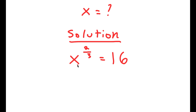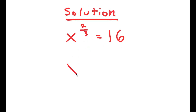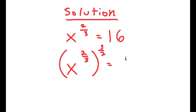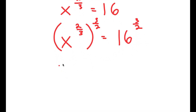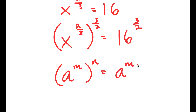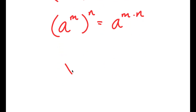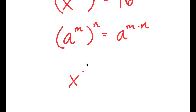What I'm first going to do is take the power of 3 over 2 on both sides. So now I have x to the power of 2 over 3 to the power of 3 over 2 is equal to 16 to the power of 3 over 2. Now, if I have something in the form a to the power of m to the power of n, this is equal to a to the power of m times n. So x to the power of 2 over 3 to the power of 3 over 2 is the same thing as x to the power of 2 over 3 times 3 over 2.